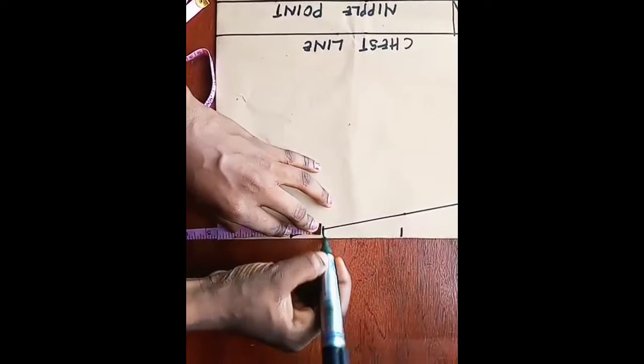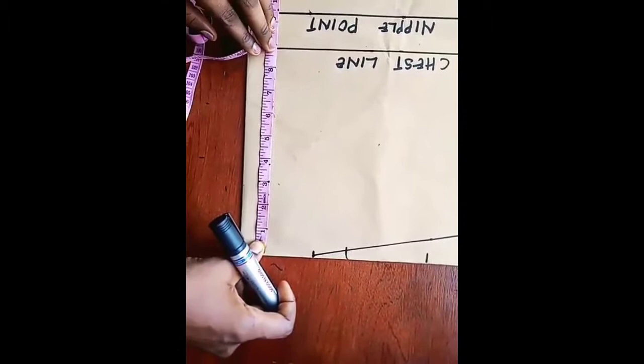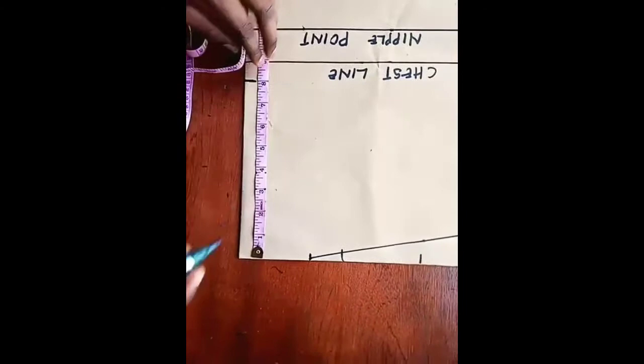To stop here. Then I'll be dropping 8 inches because I want it to be very open. For me I want it to be very open. Then I'll do my V neck like this.